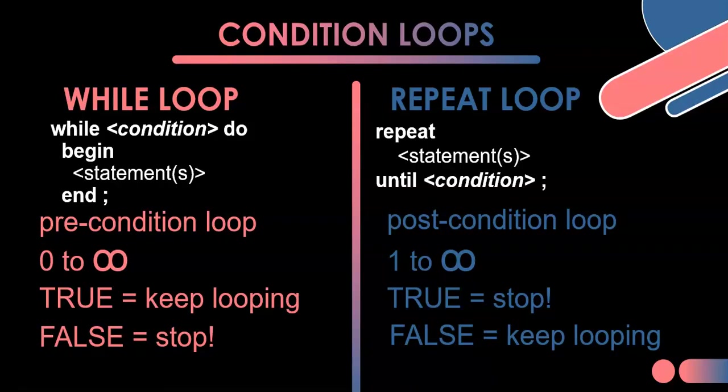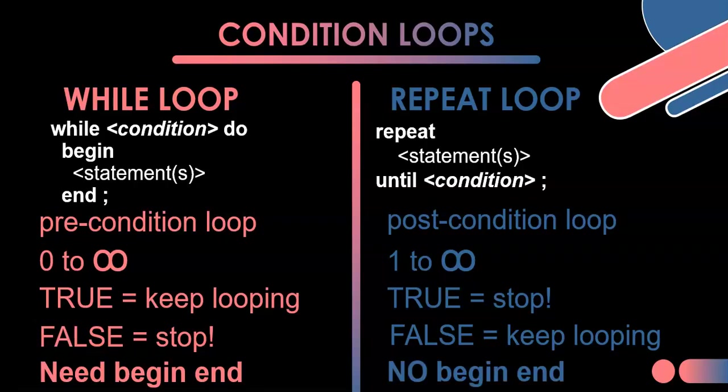In the while loop, we needed a 'begin' and 'end,' which is very important if you want to do multiple statements. But with a repeat loop, we don't need that because the statements are encased between the 'repeat' and 'until' operators. Those are the key differences between a repeat and a while loop.